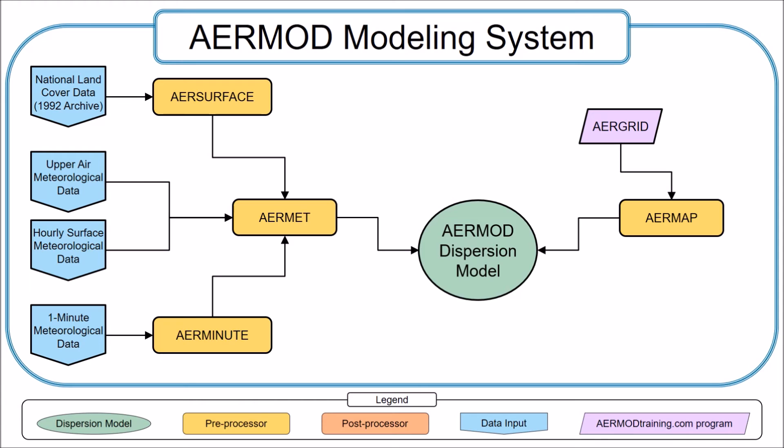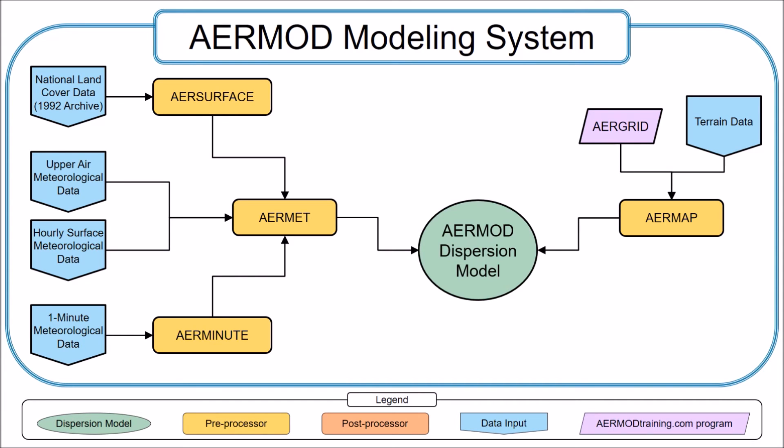Next, AERMAP will determine the elevation and hill height scale for each receptor based on USGS digital terrain data.